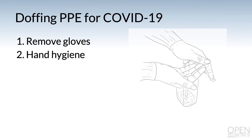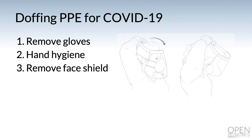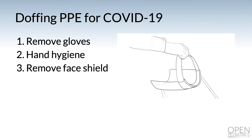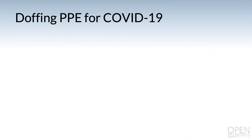Your hands are always dirty. The next thing you want to do is remove the face shield. To remove it, lean forward, grasp the back strap at the back of your head, and remove the shield in a motion away from you. Immediately discard the face shield and then perform hand hygiene.